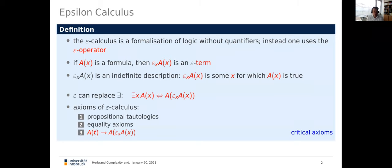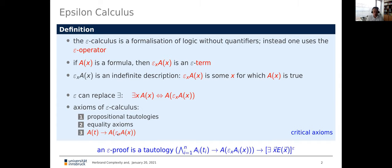What are the axioms of the epsilon calculus? We have all tautologies, we have the equality axioms, and we have the so-called critical axioms, which govern the interpretation of the epsilon term — namely, if the formula A of t holds, then also the formula where we have replaced t with this indefinite description. We can conceive an epsilon proof as simply a tautology which takes as assumptions all the critical axioms used in the proof, and as conclusion the actual end formula we want to prove — with all quantifiers replaced by corresponding epsilon terms.